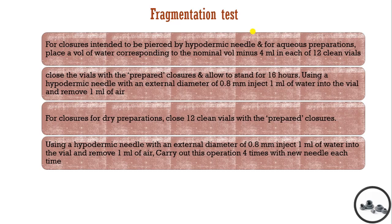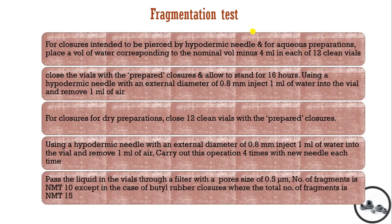Using a hypodermic needle with an external diameter of 0.8 mm, we inject 1 ml of water into the vial and remove 1 ml of air. We carry out this procedure 4 times with a new needle each time, at a different site each time. We pass the liquid through a filter with a pore size of 0.5 micrometer. The number of fragments should not be more than 10, except for butyl rubber closures where the total number should not be more than 15.